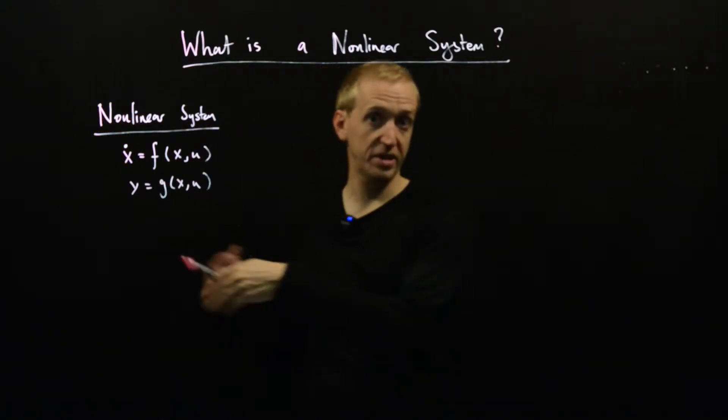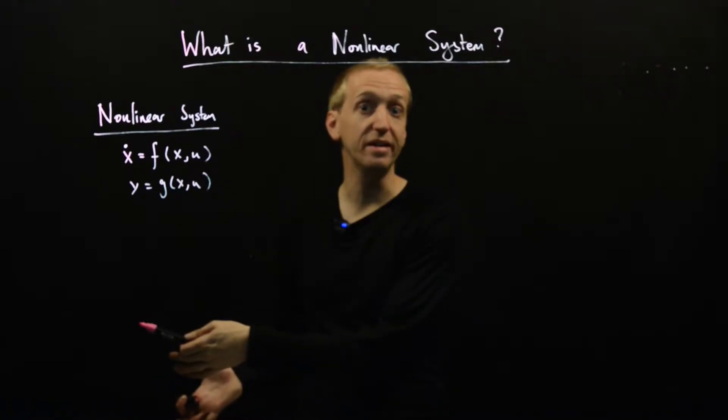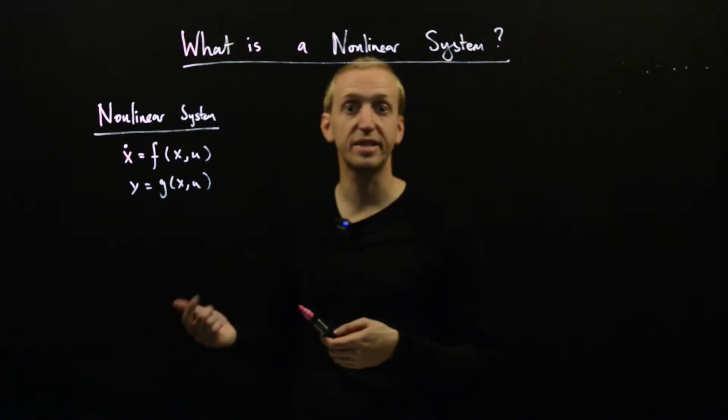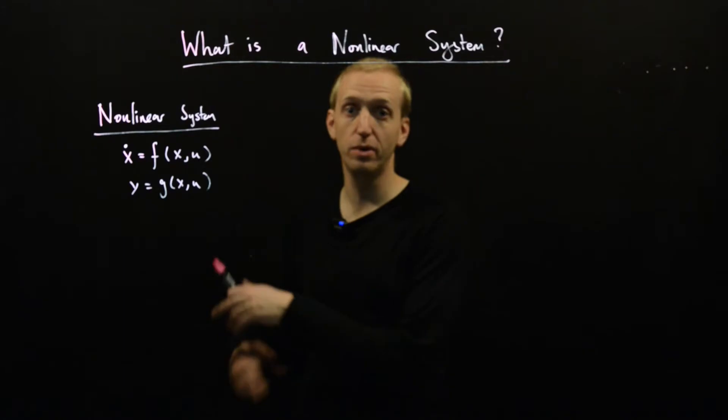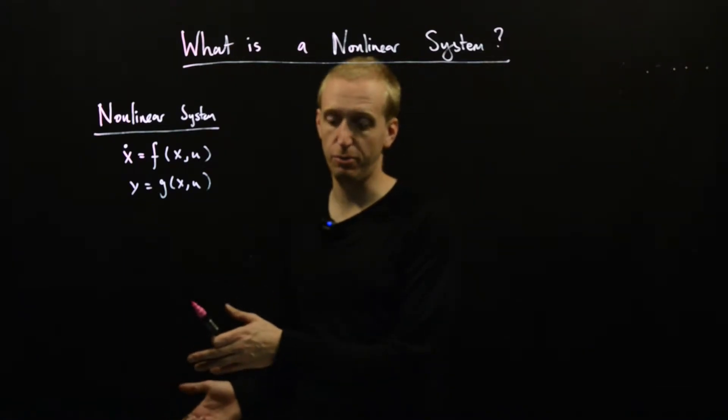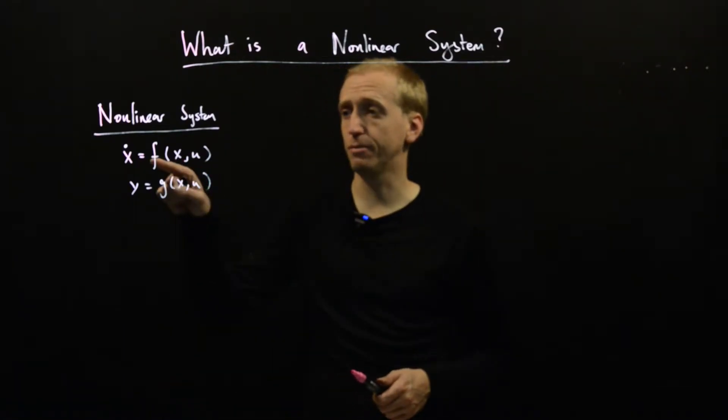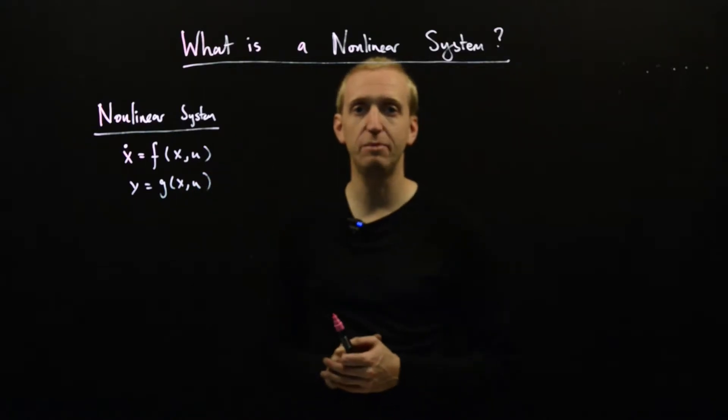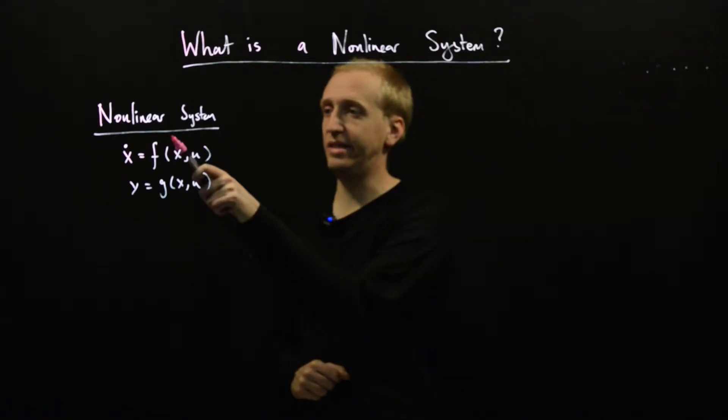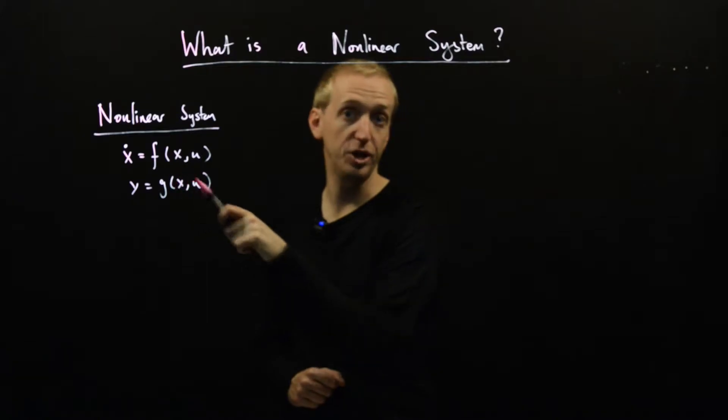Here u, x, and y all have exactly the same interpretations as in the linear case - they're the input, state, and output just as before. Everything can be vectors just as before. The only difference is we've replaced the matrices a, b, c, and d with these general functions f and g.